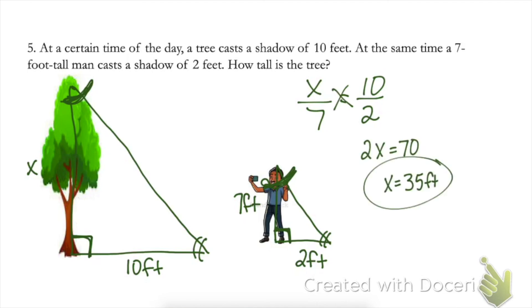We get 35 feet. Now it's always a good idea in these word problems to think about whether this makes sense. First of all, the shadow of the tree is longer than the shadow of the man, so we would expect the tree to be taller than the man who is seven feet. So this seems like a reasonable answer to me.